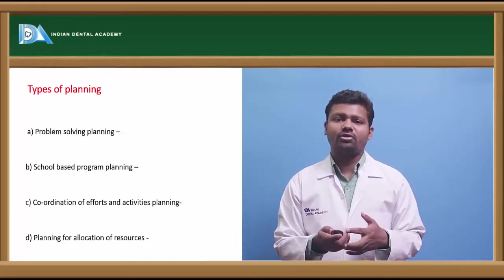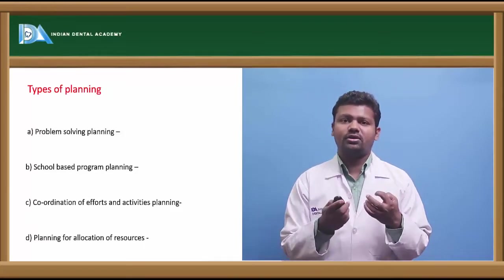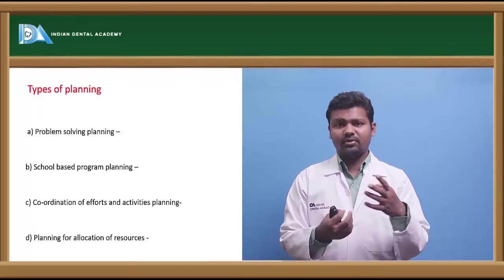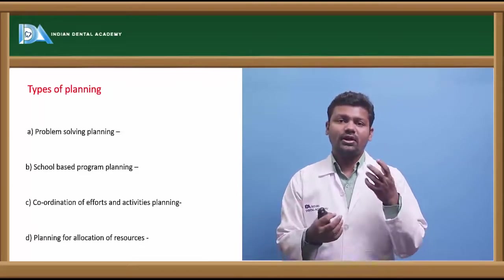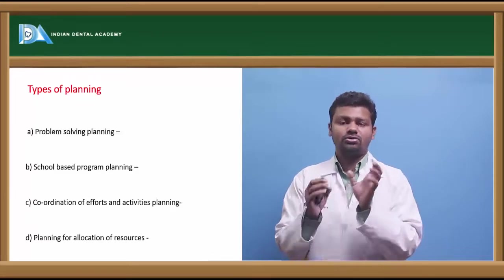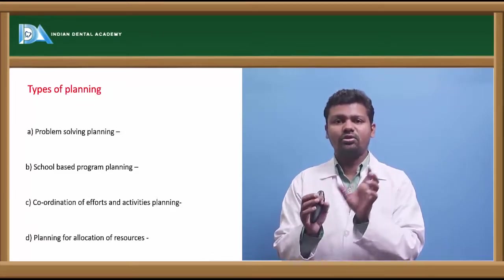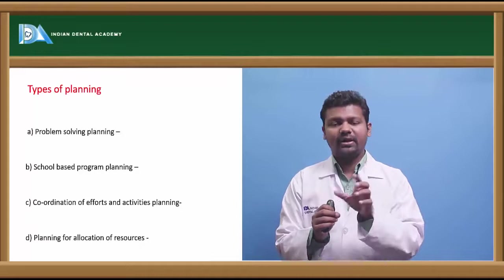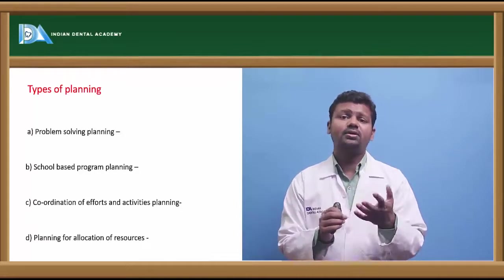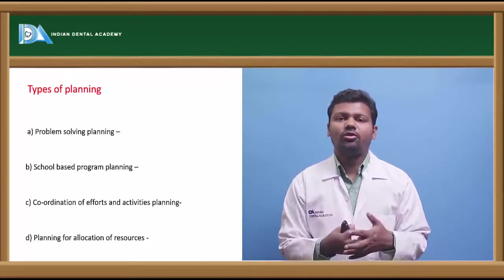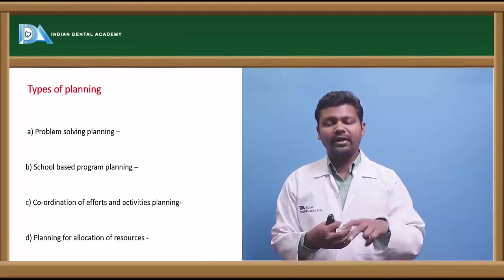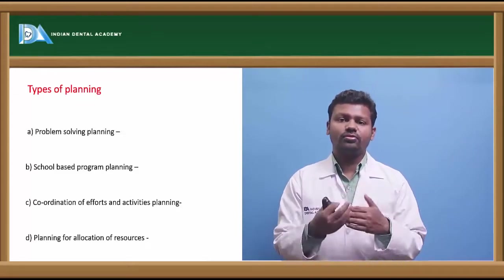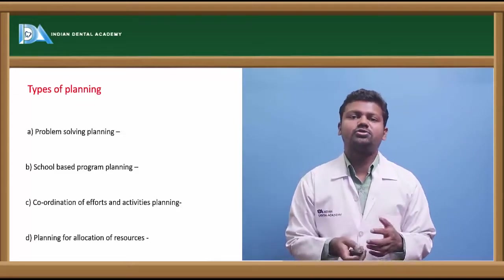Planning for allocation of resources. Many planning can be done to identify the resources. Example I will give you, if there is an area in a school where the prevalence of dental caries is very high. We are applying fluoride application but the economic status is not good because the fluoride application will be costing more. So we can replace that fluoride application through a sealant replacement. So it will be beneficial for both of them and the allocation of resources can be done.